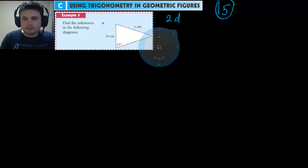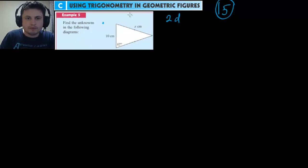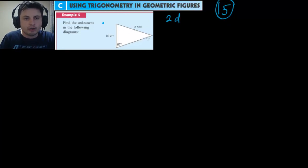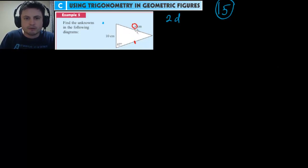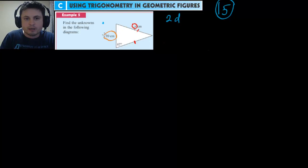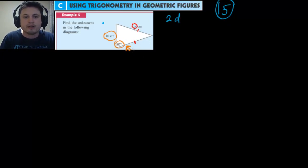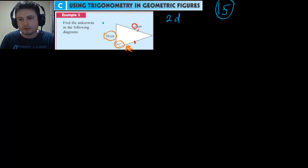Let's start with the first question from your book — this is Example 5 from page 454. It gives you a triangle that is not a right triangle and asks you to find the unknowns in the diagram. The only unknown is X, the missing side. This is an isosceles triangle, meaning these two sides are actually equal, and we have one side and one angle. Whenever you see an angle, you need to use trigonometry — sine, cosine, or tangent.